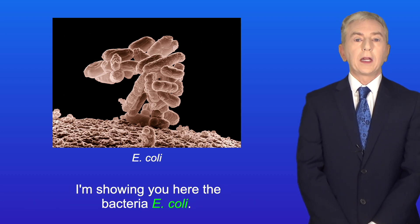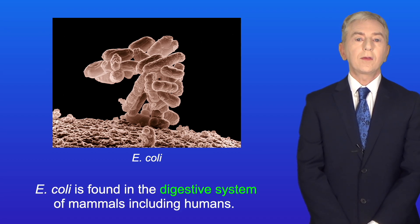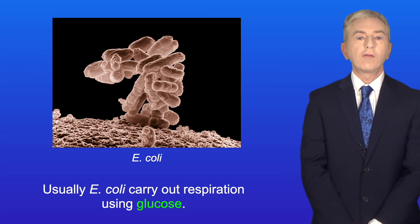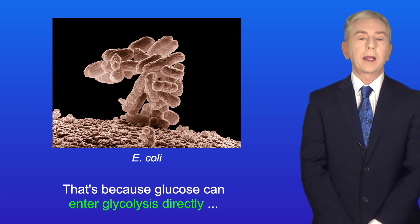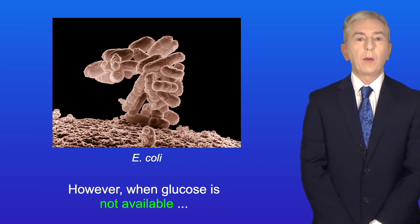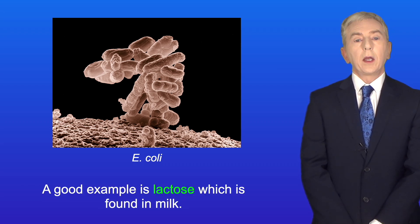I'm showing you here the bacteria E. coli, which is found in the digestive system of mammals including humans. Usually E. coli carry out respiration using glucose, because glucose can enter glycolysis directly and so is relatively easy to metabolize. However, when glucose is not available, E. coli can use other molecules. A good example is lactose, which is found in milk.